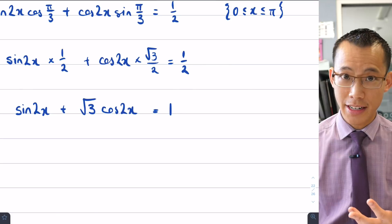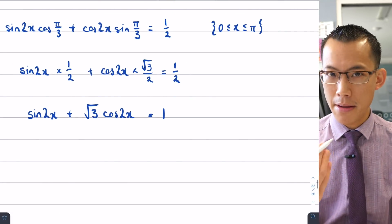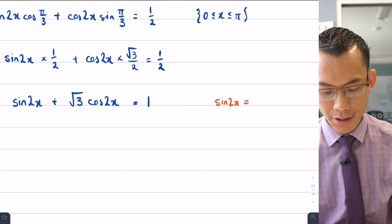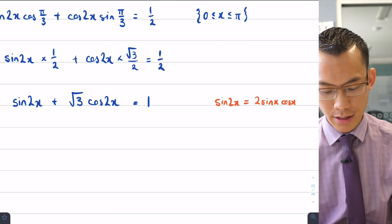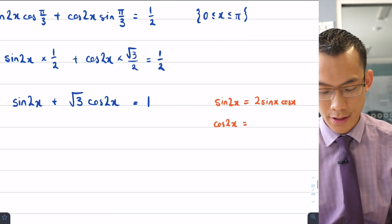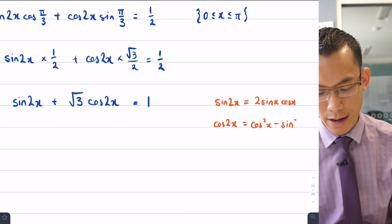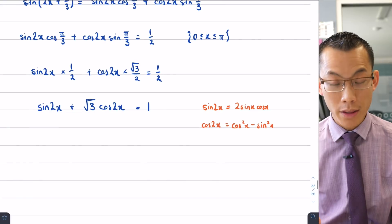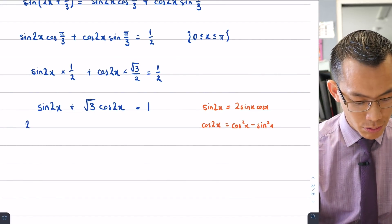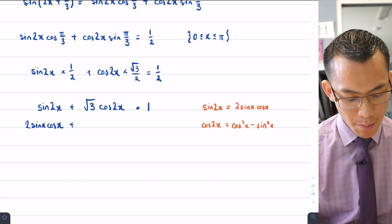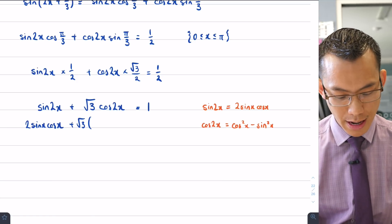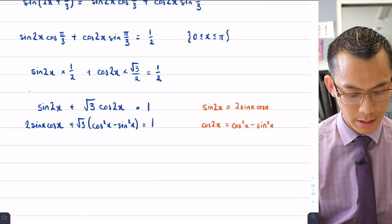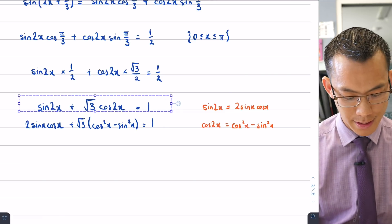Now I want to deal with sin(2x) and cos(2x) using double angle identities from the Extension 1 course. sin(2x) = 2 sin x cos x, and cos(2x) = cos²x − sin²x. Substituting both: 2 sin x cos x + √3(cos²x − sin²x) = 1.